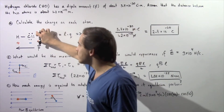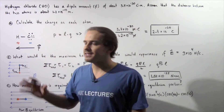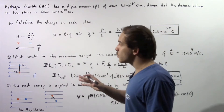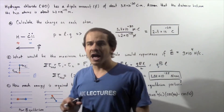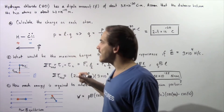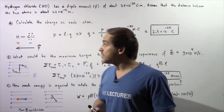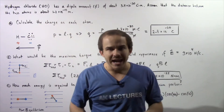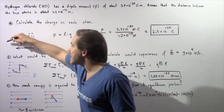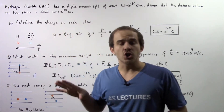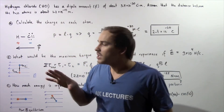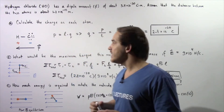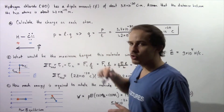Because the chloride atom is more electronegative than the H atom, it will pull electrons closer. Electrons will spend more time around the chloride atom than around the hydrogen atom. That means the chloride atom will develop a small negative charge, and the hydrogen atom will develop the same magnitude of charge, but positive. To calculate the quantity of charge, we use the following equation.